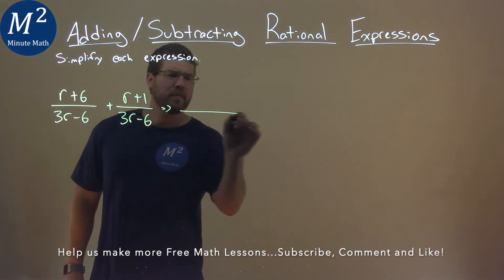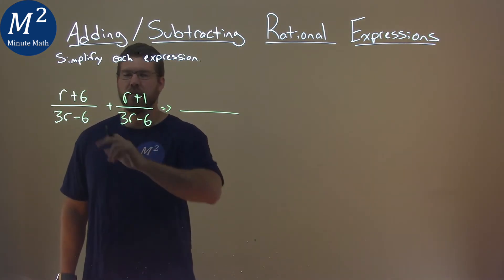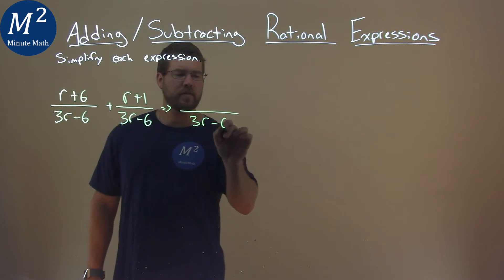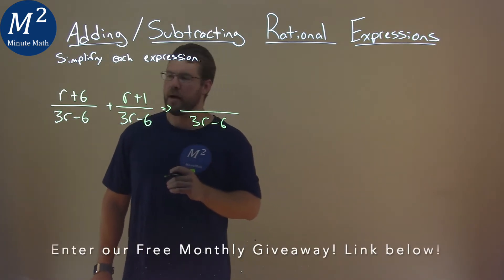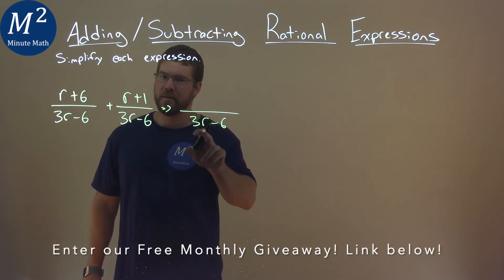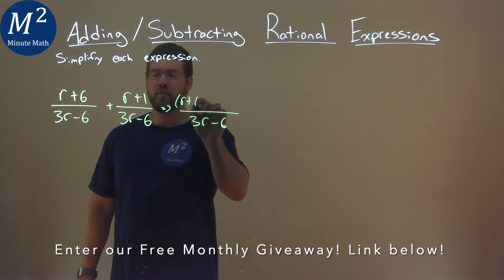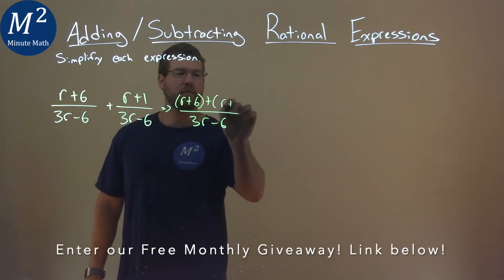The beauty of this expression is that we have the same denominator for both fractions. So we have the same denominator, we can write this as just one big fraction right off the bat with the same denominator, 3r minus 6. The numerators we just add r plus 6 plus r plus 1.